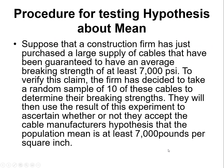Now let me discuss a simple example. Suppose a construction firm has purchased a large supply of cable guaranteed to have an average breaking strength of at least 7000 PSI. To verify this claim, the firm takes a random sample of n equals 10 cables. They will use the results to decide whether to accept the cable manufacturer's hypothesis that the population mean is at least 7000 pounds per square inch.